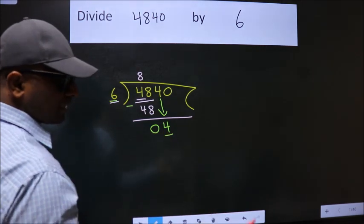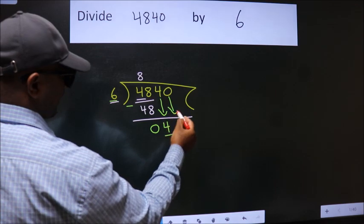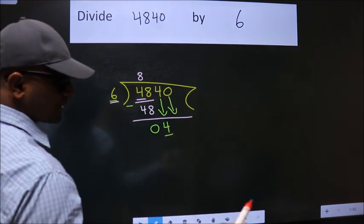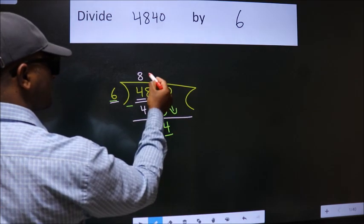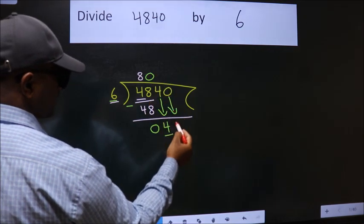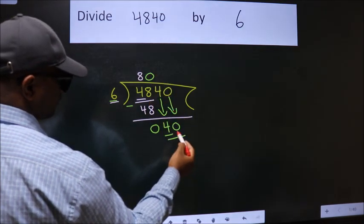So, we should bring down the second number. And the rule to bring down second number is put 0 here. Then only we can bring down this number. So, 40.